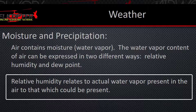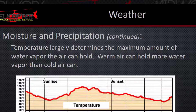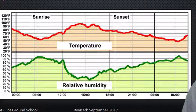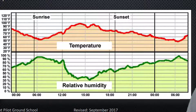Relative humidity relates the actual water vapor present in the air to that which could be present. Temperature largely determines the maximum amount of water vapor the air can hold. Warm air can hold more water vapor than cold air. As you can see on this graph, it takes a snapshot of an entire day. As the sun comes up and the air starts heating up, you can see that the relative humidity goes down — so the warmer the air, the more water it can hold.